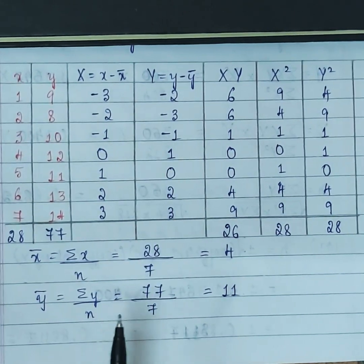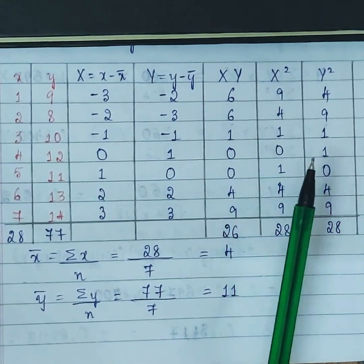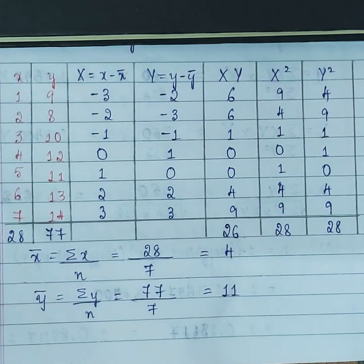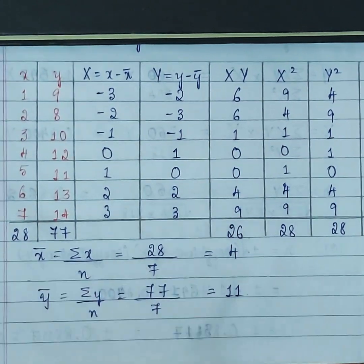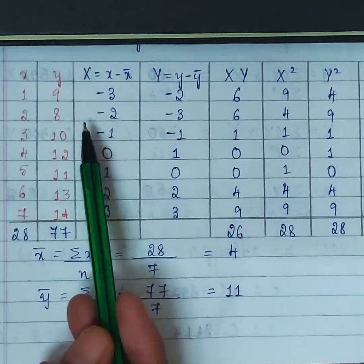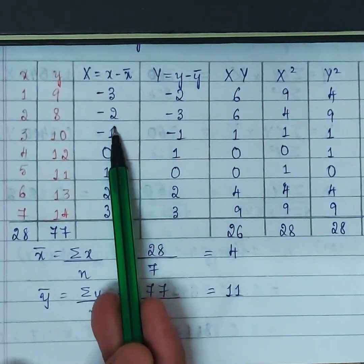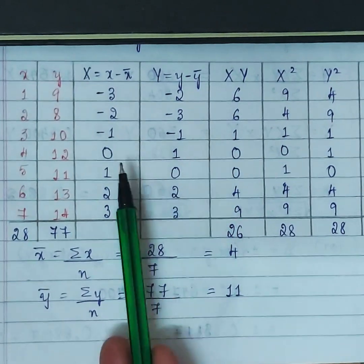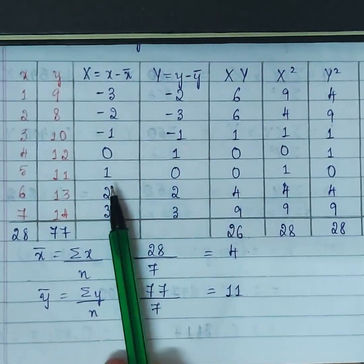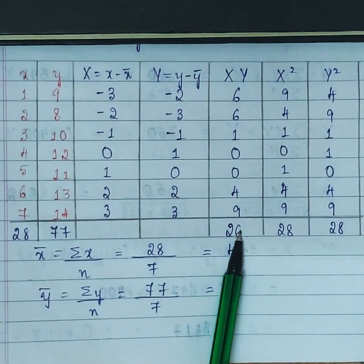Now we find the other required values. We compute XY by multiplying each Capital X and Capital Y: (−3)(−2) = +6, (−2)(−3) = +6, (−1)(−1) = +1, anything × 0 = 0, 1×1 = 1 (same applies), 2×2 = 4, 3×3 = 9. So we have the XY column.